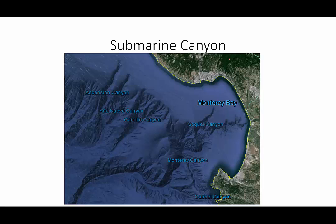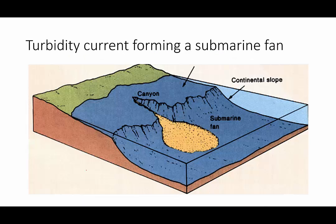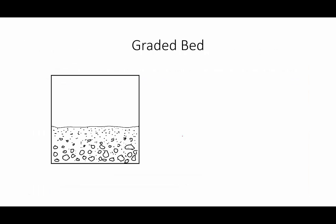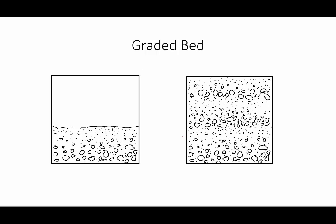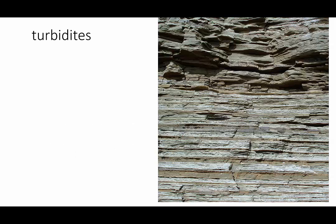A very different environment of deposition would be a submarine canyon. Here is Monterey Canyon, which brings sediment from the shallow continental shelf down to deeper water. The sediment builds up at the top of the canyon until it finally avalanches down in what is known as a turbidity current. The avalanche of sand, silt, and clay is deposited at the base of the continental shelf in a submarine fan. As the sediment settles out, the larger sediments land first because they're heavier, resulting in a graded bed. With each turbidity current comes another graded bed. Here you can see the result of three different turbidity currents making three graded beds.